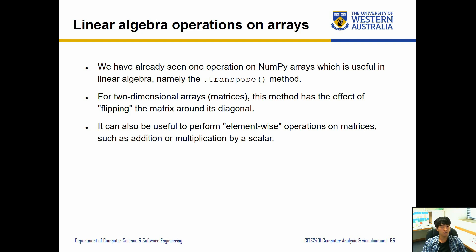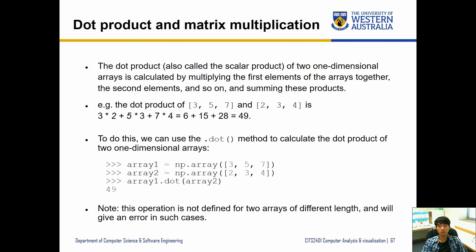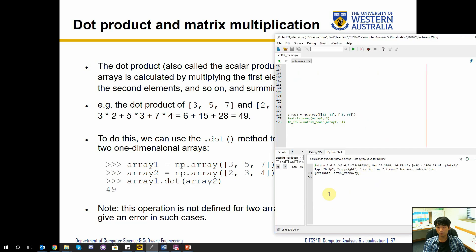One of the linear algebra operations we'll look at is the dot product and matrix multiplication. The dot product, also called the scalar product, of two one-dimensional arrays is calculated by multiplying elements pairwise and summing. For example, with arrays [2,3,5,7] and [2,3,4], we multiply element by element — 3×2, 5×3, 7×4 — and add them together, giving us 49. This can be done using the dot method of the NumPy array.